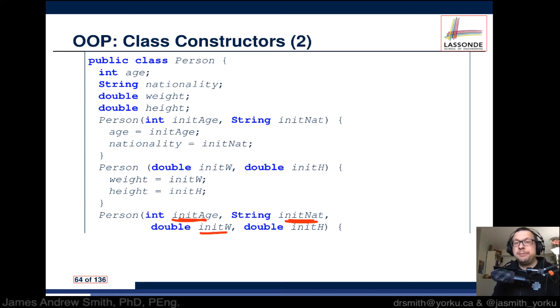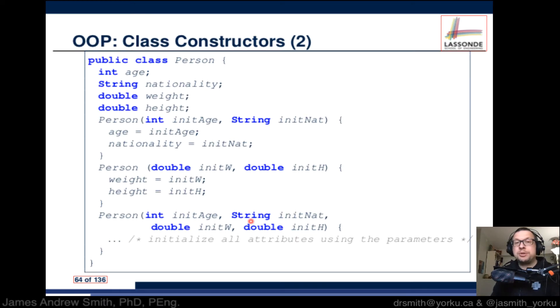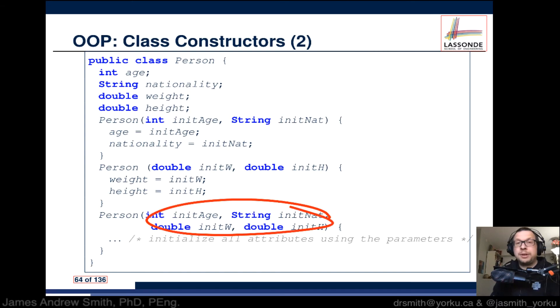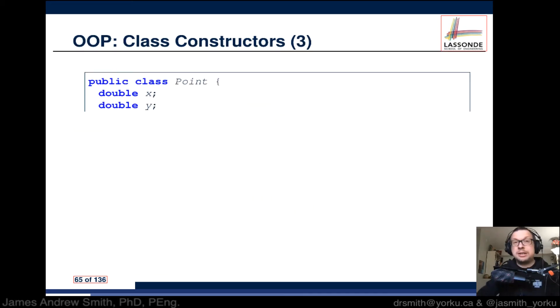Let's take a look at another example here. We're looking at the class Point, and Point has two internal attributes: x and y.